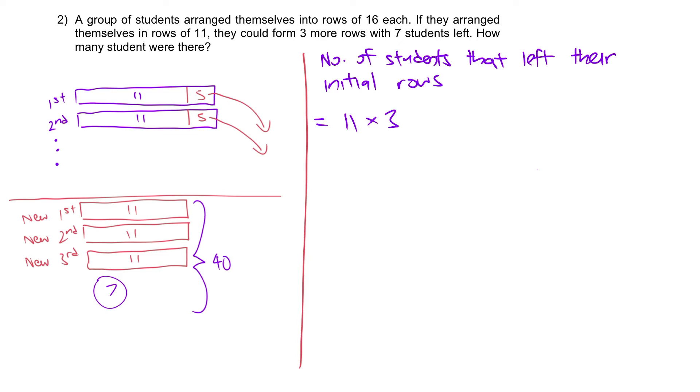For example, we have 11 times 3 plus the 7. Okay, 11 times 3 plus the 7 to get the 40. 40, again, these 40 students, they are the five students that left to form this 40.